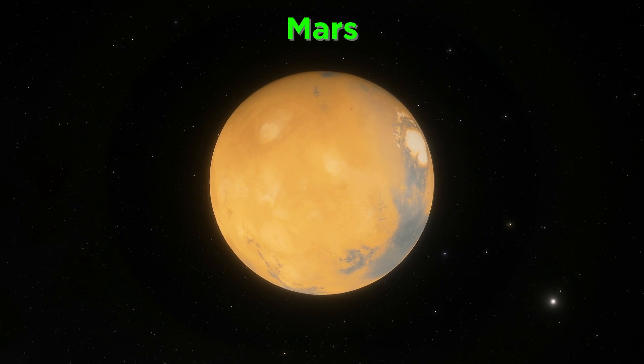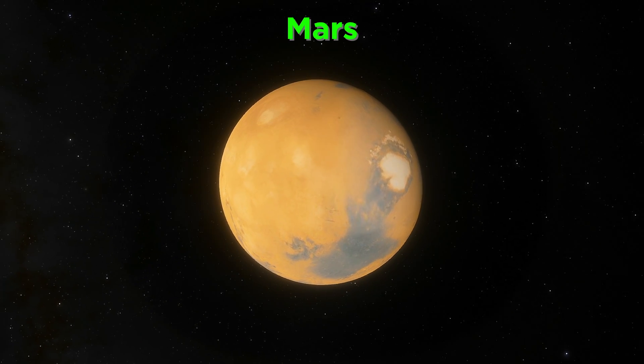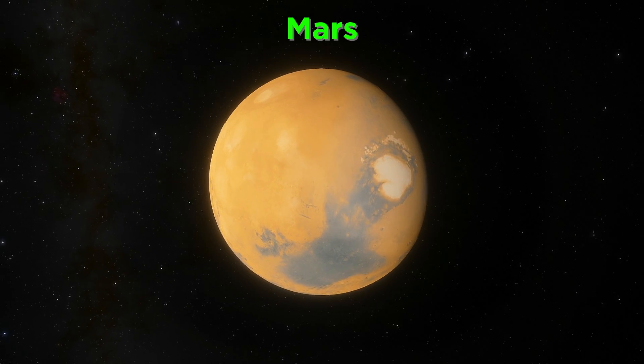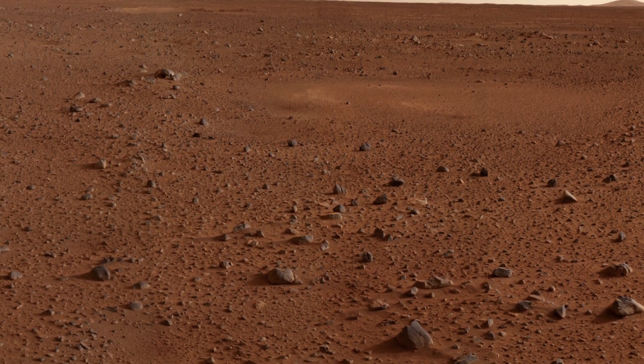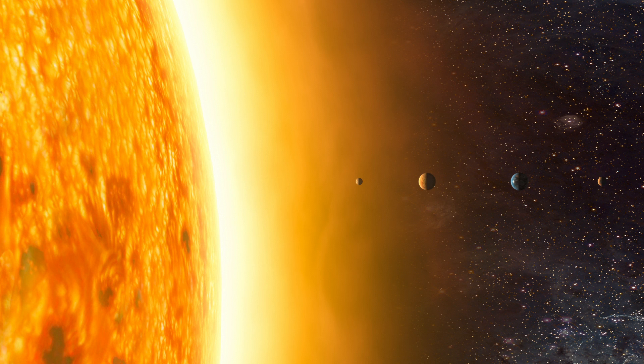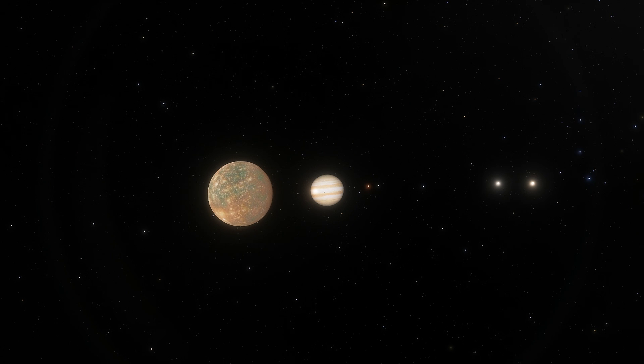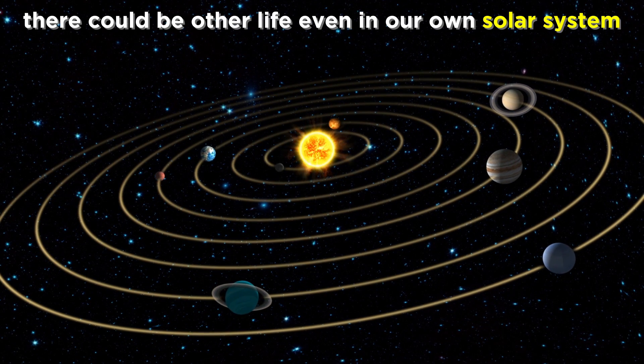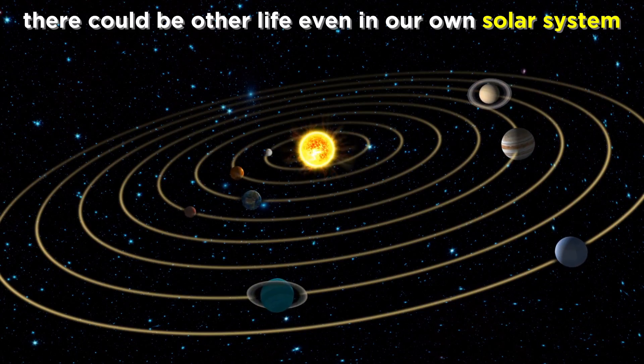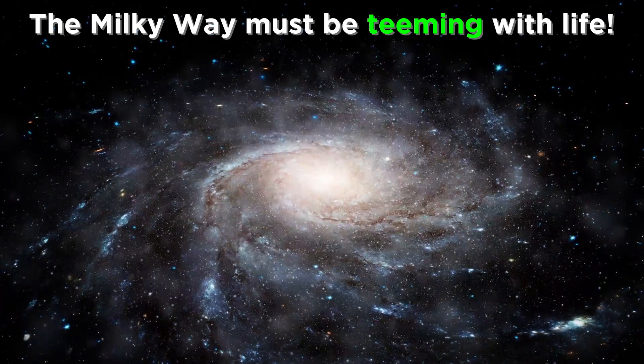Given our knowledge of the history of Mars, it is not outrageous to believe that simple unicellular life may have existed there in the distant past, and may continue to exist beneath its surface. Mars is literally our next door neighbor, and we also identified multiple moons in the outer solar system that seem ideal for life. With so many possibilities just in our tiny little nook of the galaxy, it seems that the Milky Way must be teeming with life.